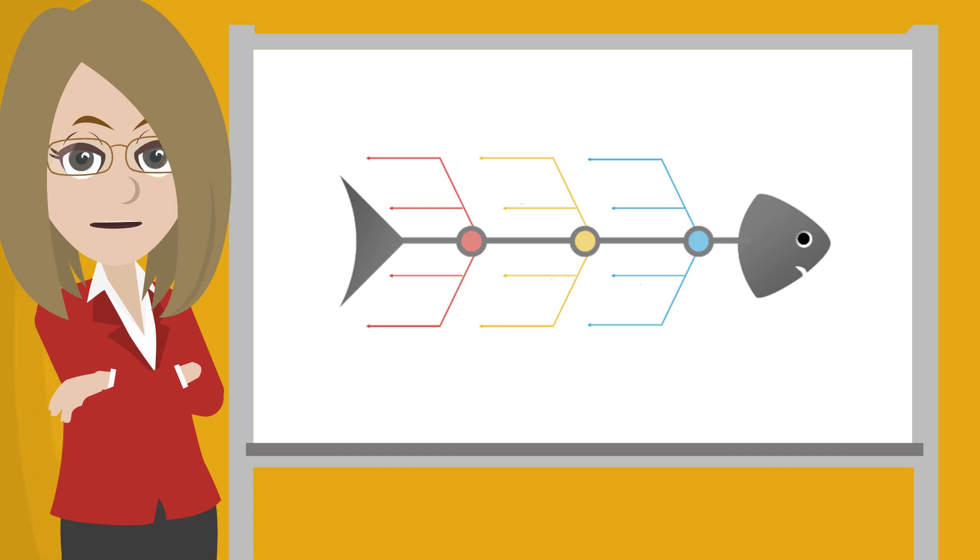All causes that are discussed are then written down in the diagram. The participants also mention possible sub-causes. These sub-causes are written down as branches in the diagram.